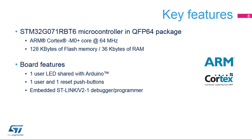The STM32G071RBT6 microcontroller features an ARM Cortex-M0+ core running at up to 64 MHz, 128 KB of flash memory, and 36 KB of RAM. It also features the following peripherals: one user LED shared with Arduino, one user and one reset push button, and an embedded ST-Link V2.1 debugger and programmer to connect your favorite development tools.